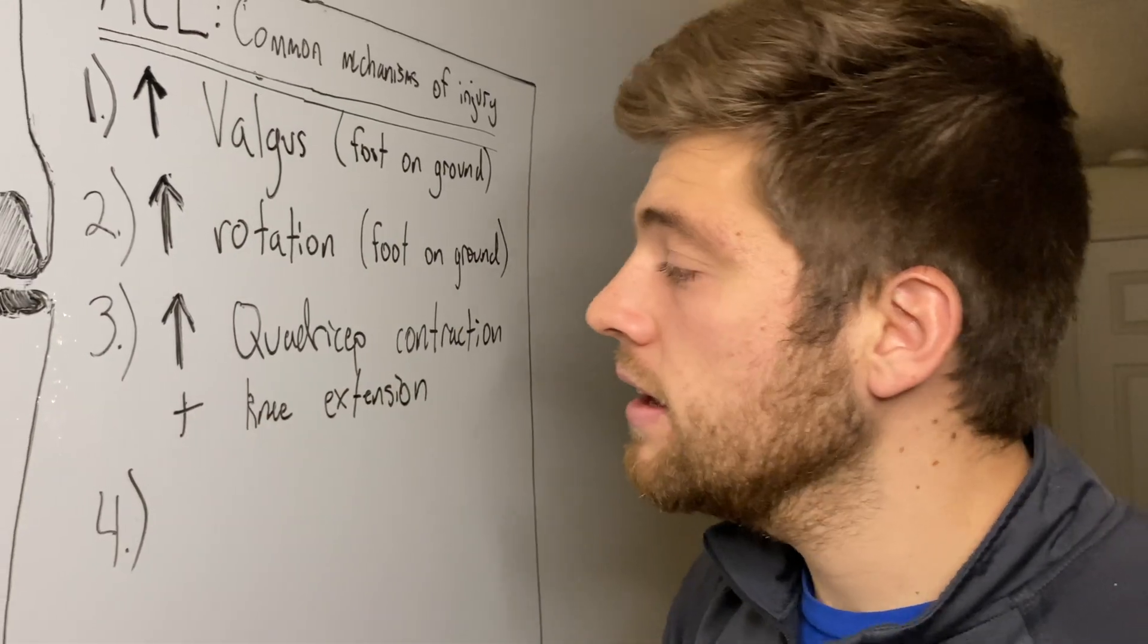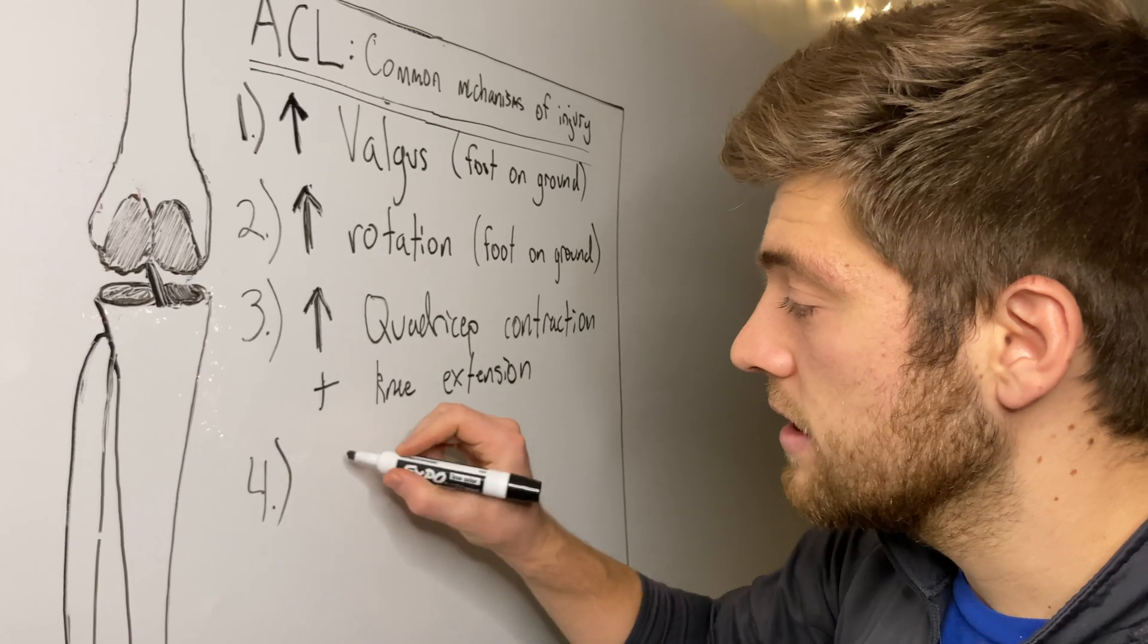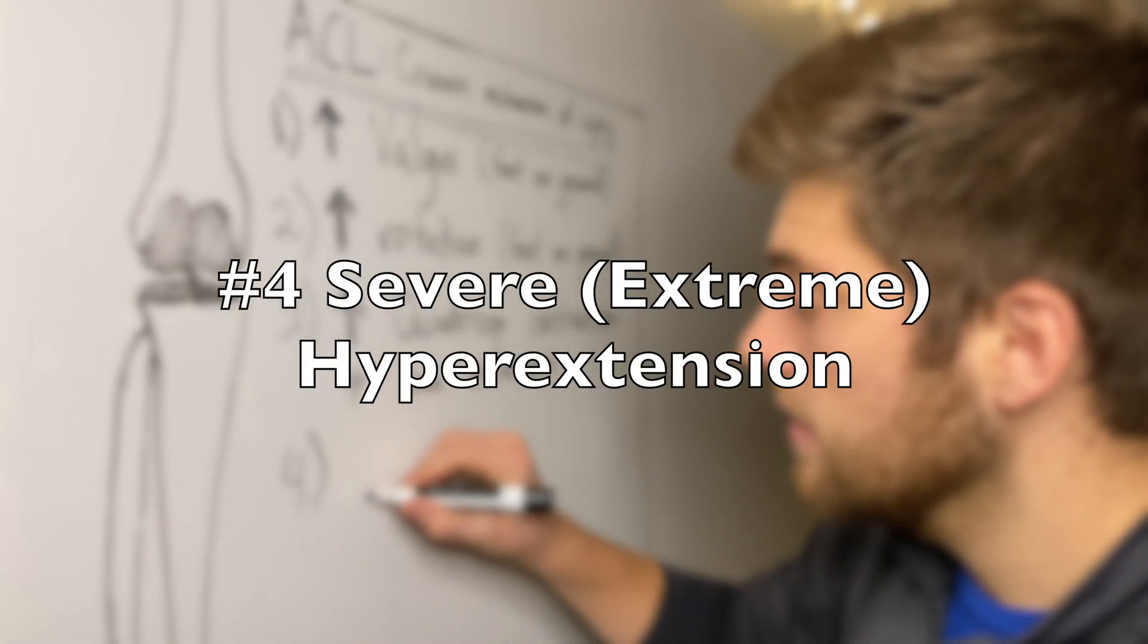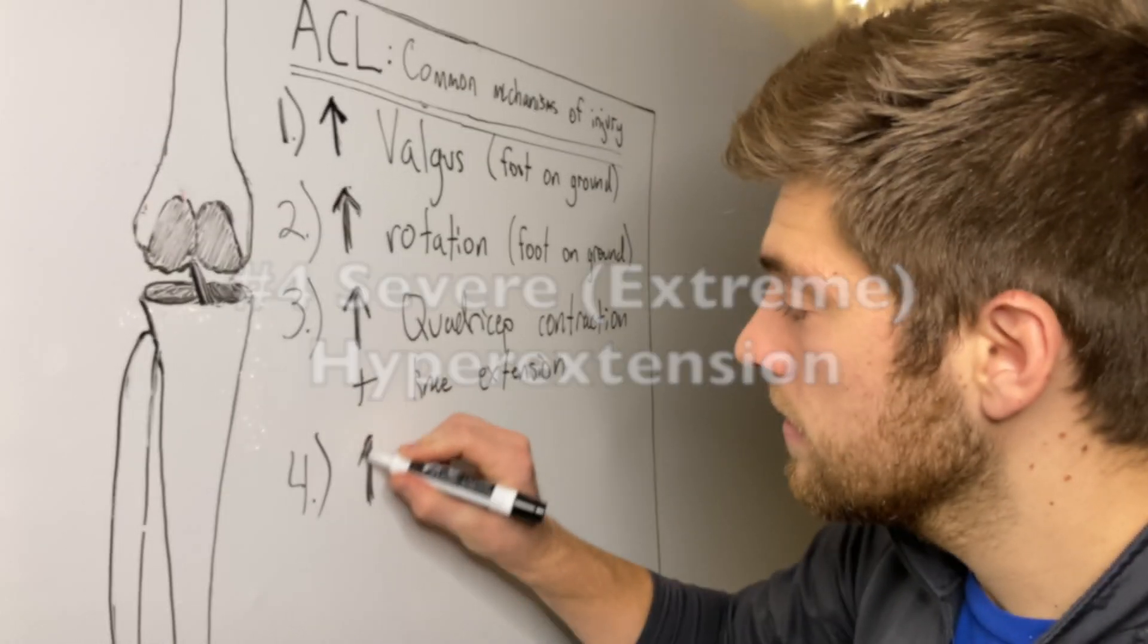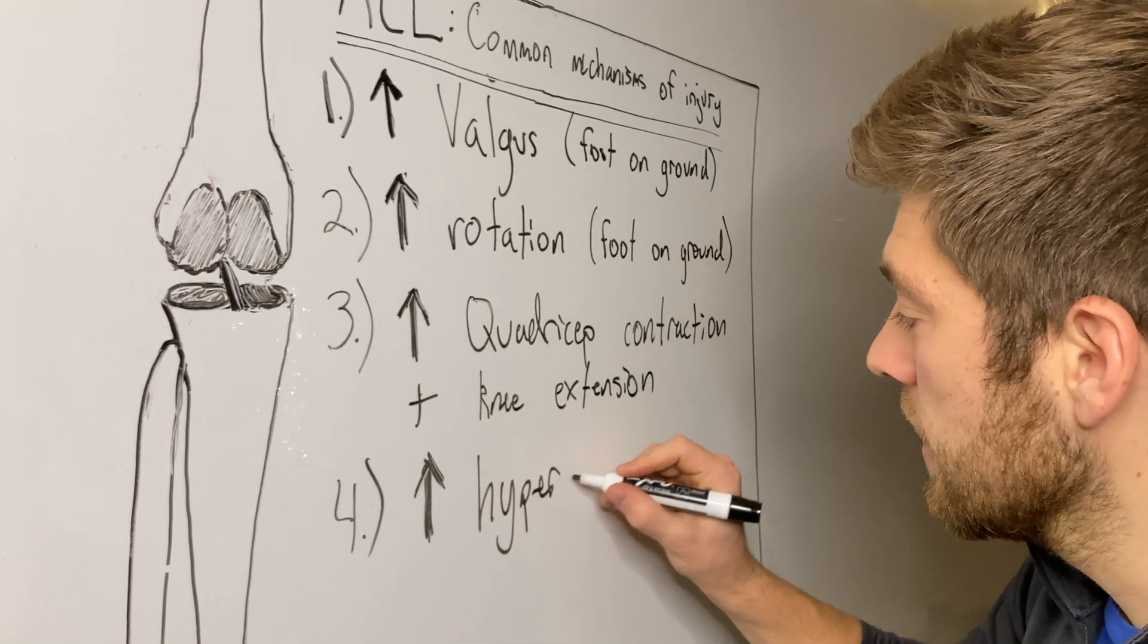And then the fourth common way that we get an ACL injury is severe hyperextension.